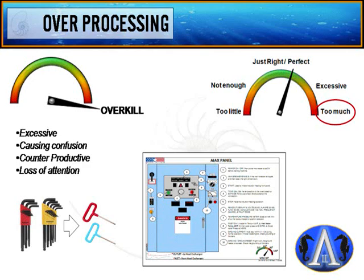Overprocessing — we call it overkill. It's excessive: for example, having all kinds of allen wrench sizes when you only need one. Keep it simple. It causes confusion and is counterproductive — too much information loses someone's attention. Work instructions need to be as simple as possible. There's a sweet spot: too little information is bad, too much is overprocessing. Excessive overkill is the point.